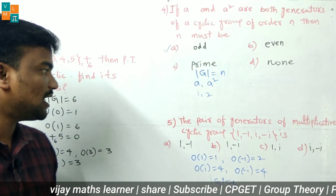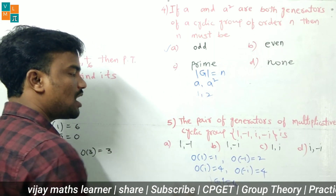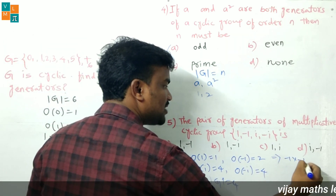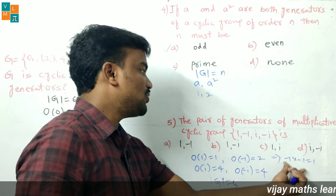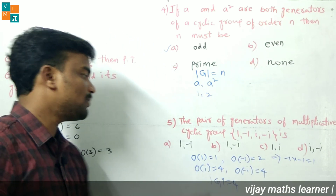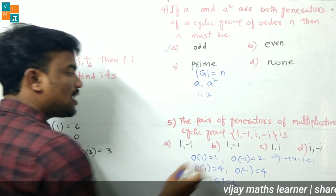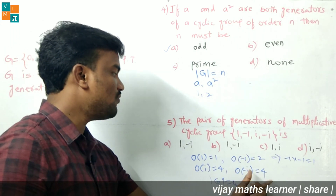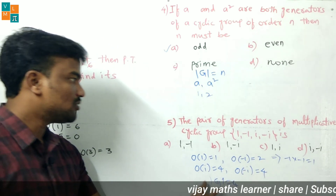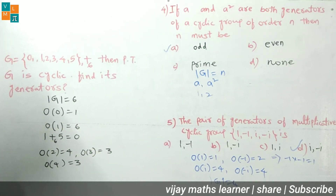Find which elements are generators. Order of 1 is 1; order of −1 is 2 (since (−1)² = 1). Order of i is 4 (since i × i × i × i = 1). Order of −i is also 4. Since i and −i have order equal to the order of the group (4), they are the generators. So option B is correct — i and −i are the generators.